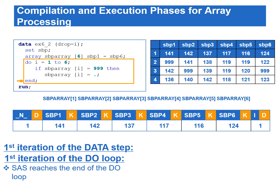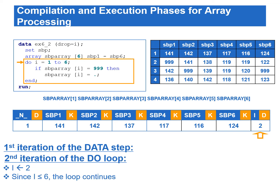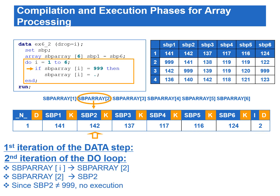SAS reaches the end of the do loop. At the beginning of the second iteration of the do loop, i is incremented to 2. Since 2 is less than or equal to 6, the loop continues. Since this is the second iteration of the do loop, the array reference SBP_array{i} is the same as SBP_array{2}, which refers to the SBP2 variable. Since SBP2 does not equal 999, there is no execution.